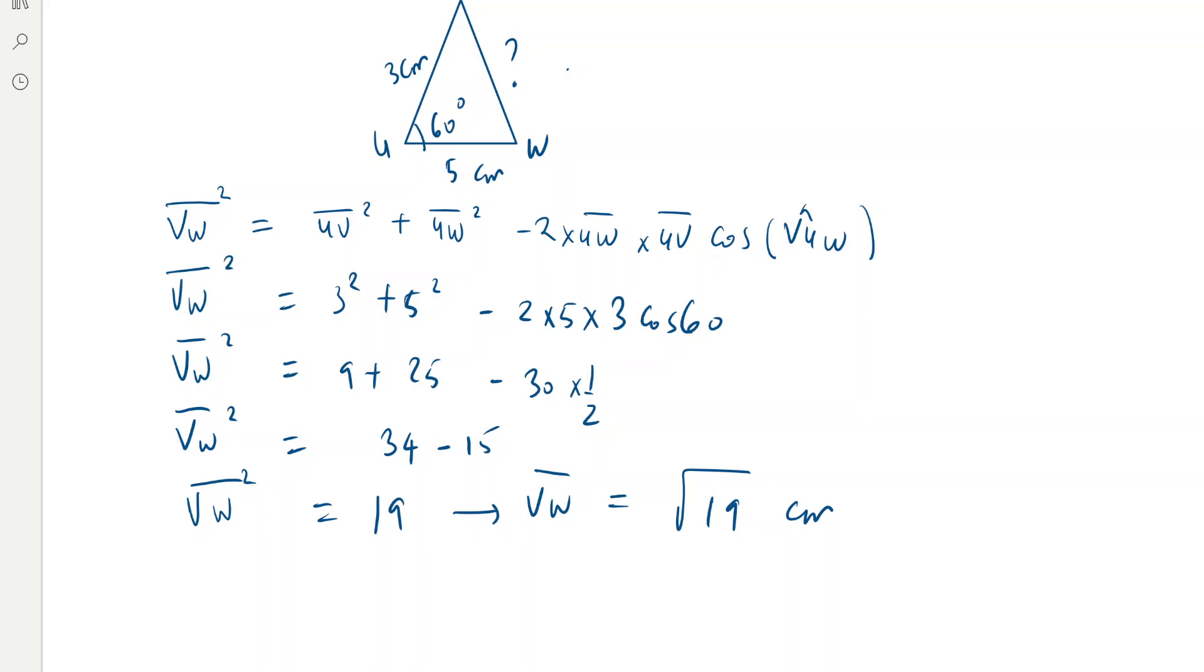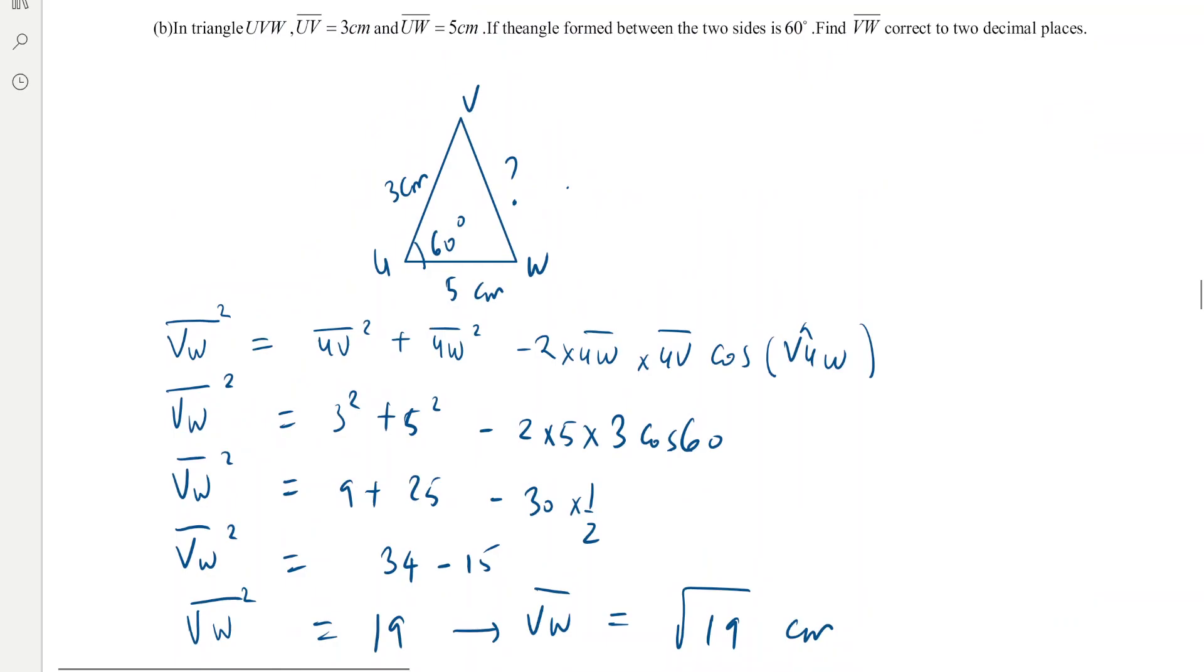You plug it to calculator, you'll be getting 4.36, so VW equals to 4.36 cm. But according to the question, VW should be correct to two decimal places.